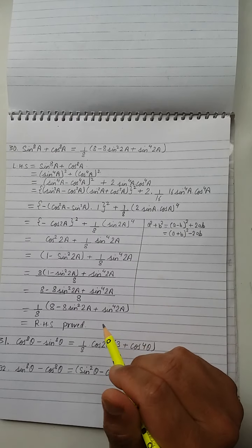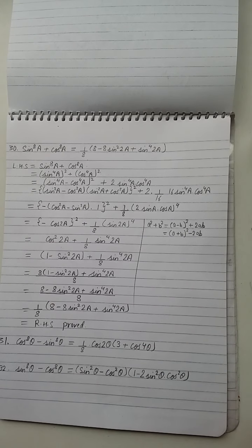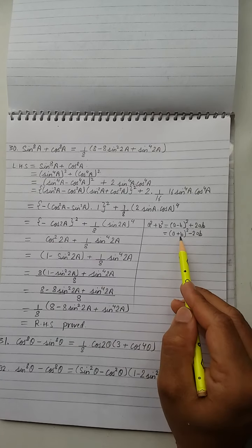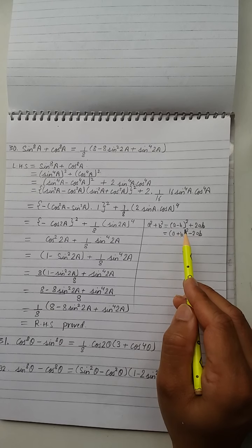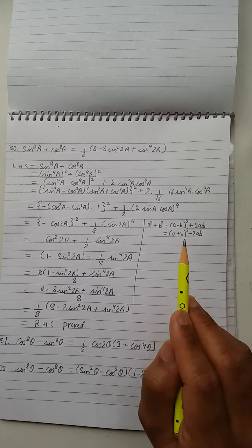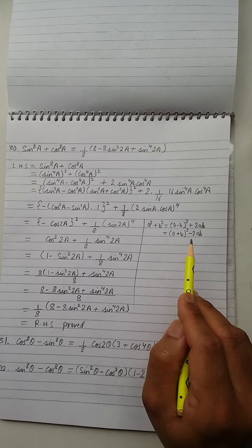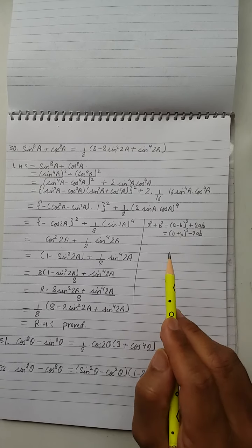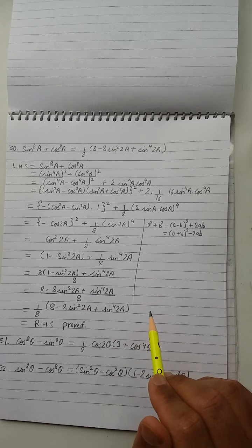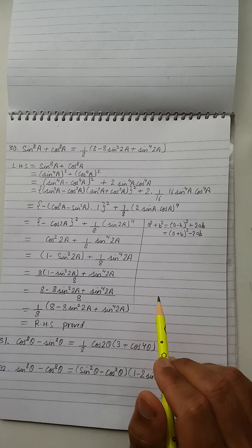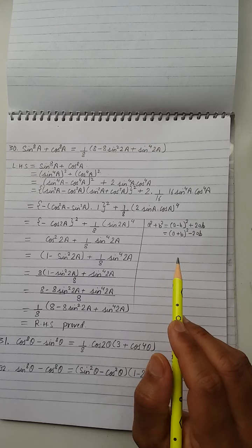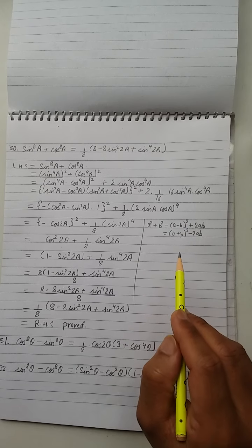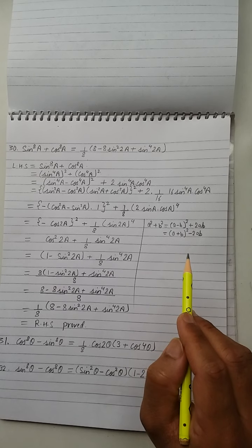You may wonder: sometimes we use (a+b)² - 2ab, sometimes (a-b)² + 2ab. How to know which to use? It is known through practice. The more you practice, the more you will learn — it's the beginning phase, don't worry.